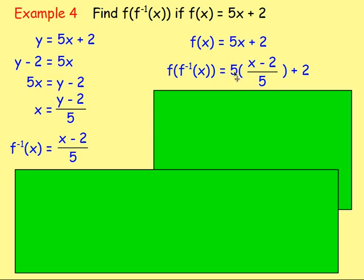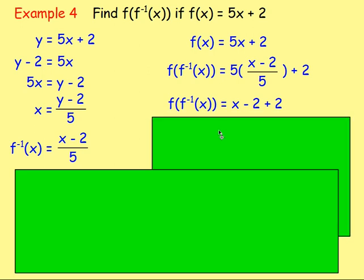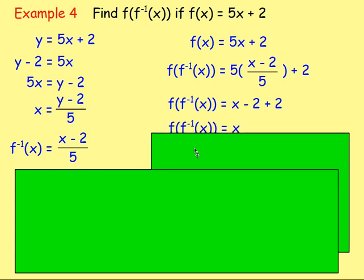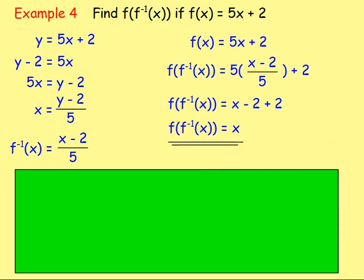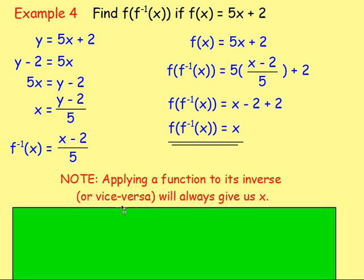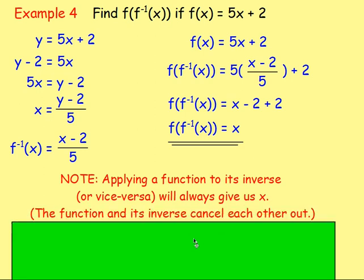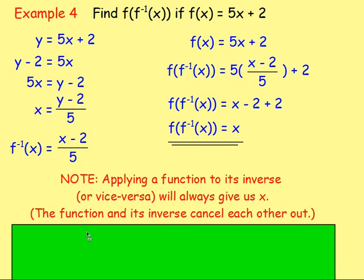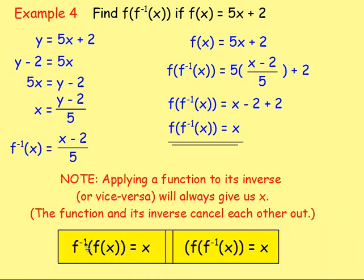To work that out: you're multiplying by 5 and dividing by 5, so they cancel out, leaving x minus 2, and then adding 2. If you subtract 2 and add 2, those also cancel out, leaving just x. Whenever you do this, applying a function to its inverse will always give us x, because the function and its inverse cancel each other out. So f to the negative one of f of x gives x, and f of f to the negative one of x also gives x — they're just cancelling each other out.